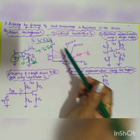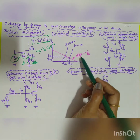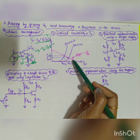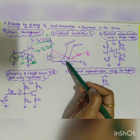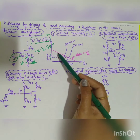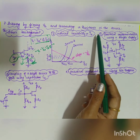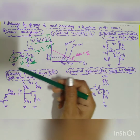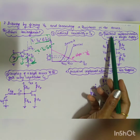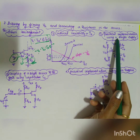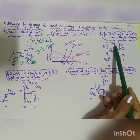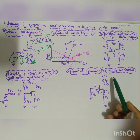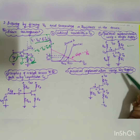One key advantage of biasing using VG and connecting a resistance in the source is that the variability of ID is reduced. For practical implementation, two circuits are used: one using a single power supply and one using a dual power supply.